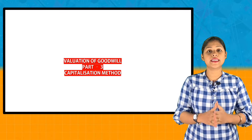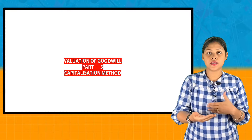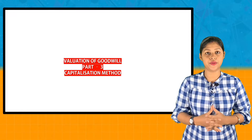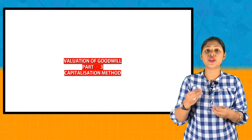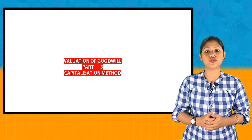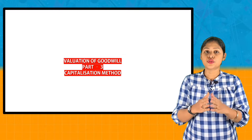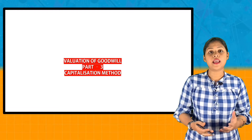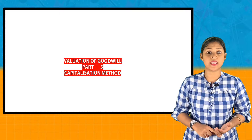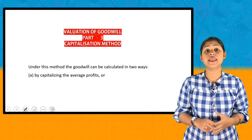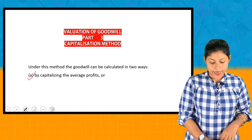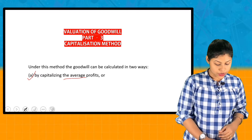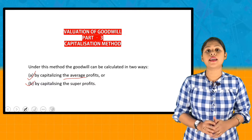Let's start today's topic: the Capitalization Method. There are two approaches: the first is capitalizing the average profits, and the second is capitalizing by super profits. We will know how to capitalize the profits and calculate goodwill using each approach.